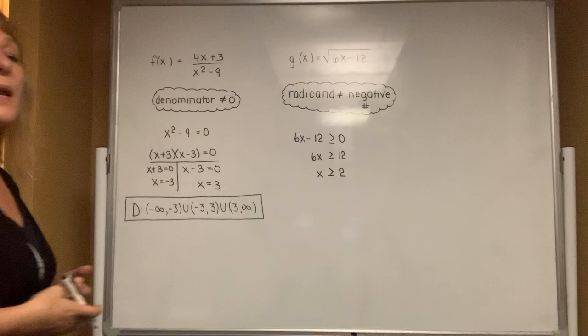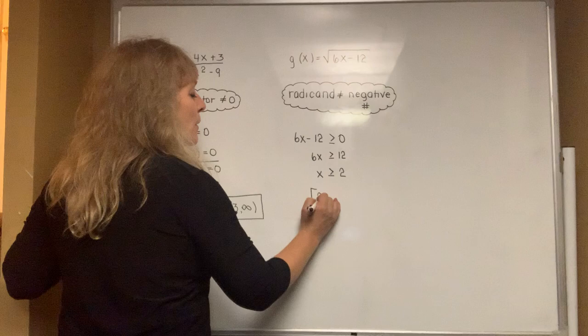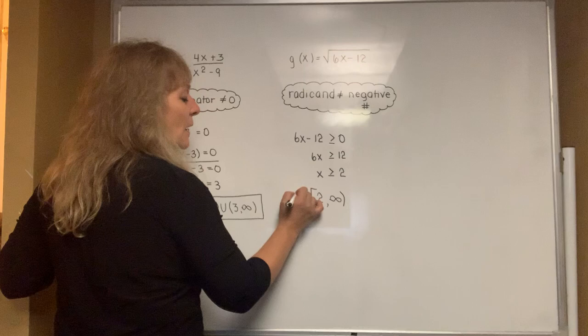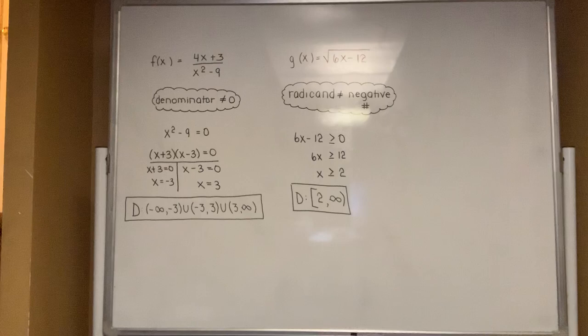Write your answer in interval notation. If you want x values that are 2 or larger, the number 2 is included so you use a bracket, and larger means it goes to infinity. The domain in interval notation is [2, ∞), standing for all x values beginning at 2 and up.